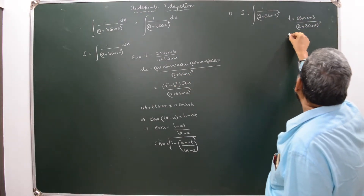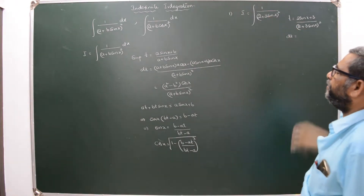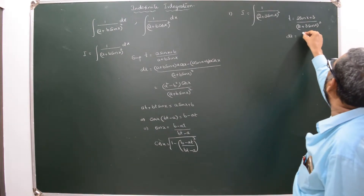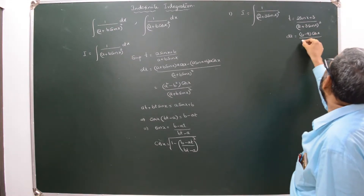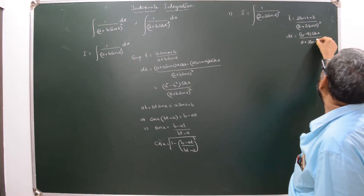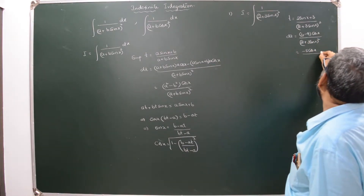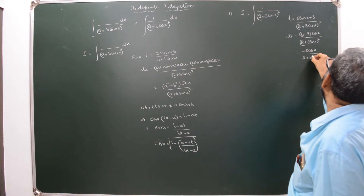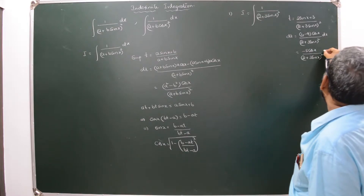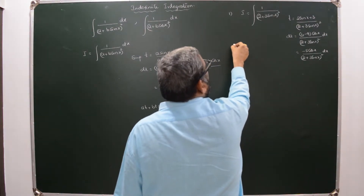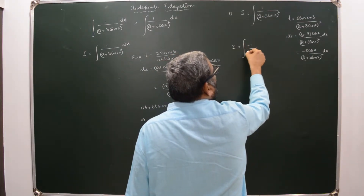Directly, we can write dt = (a² - b²)·cosX / (2 + 3·sinX)², which is (4 - 9)·cosX/(2 + 3·sinX)², giving dt = -5·cosX/(2 + 3·sinX)² dx. Now I is equal to the integral, and I can rewrite it accordingly.